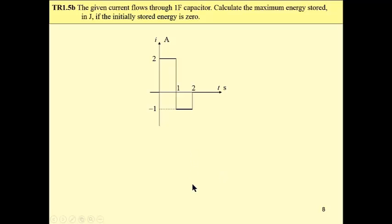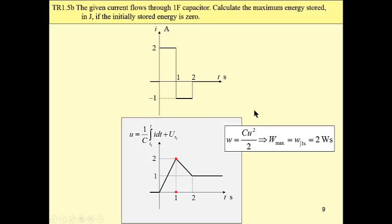Now let us assume that our task is calculation of the maximum energy stored in the capacitor. If we want to find energy stored in the capacitor, we have to recall the formula. This is the formula. Energy stored in a capacitor is proportional to the square of instantaneous value of voltage, so we have to find the voltage waveform at first.